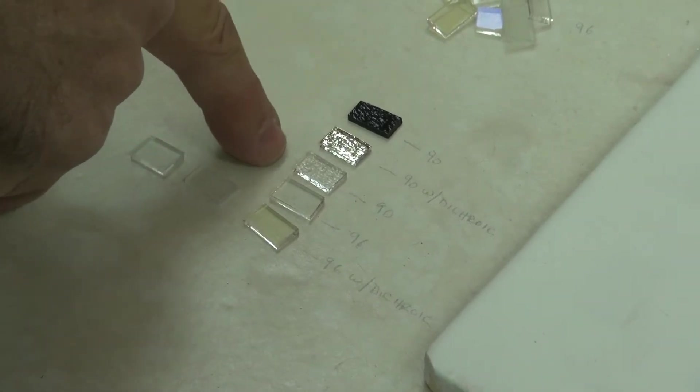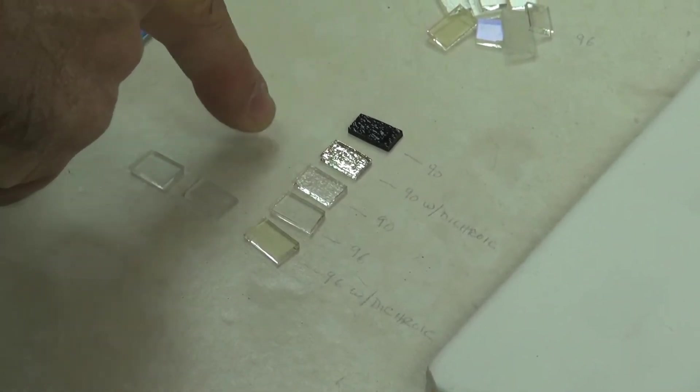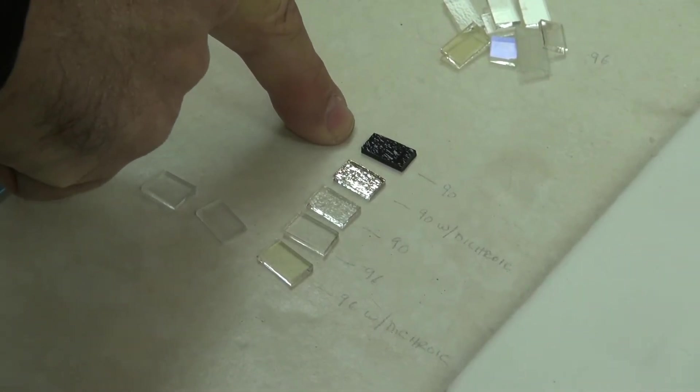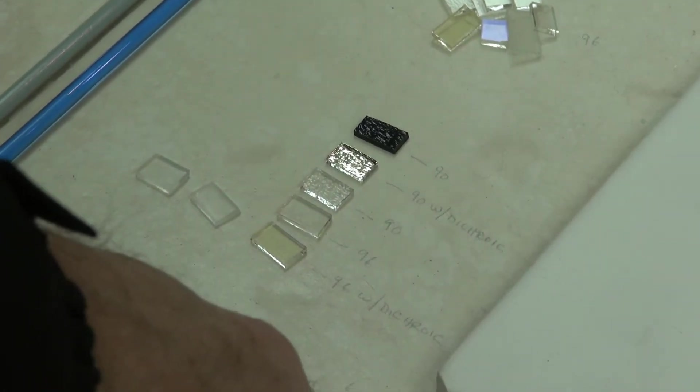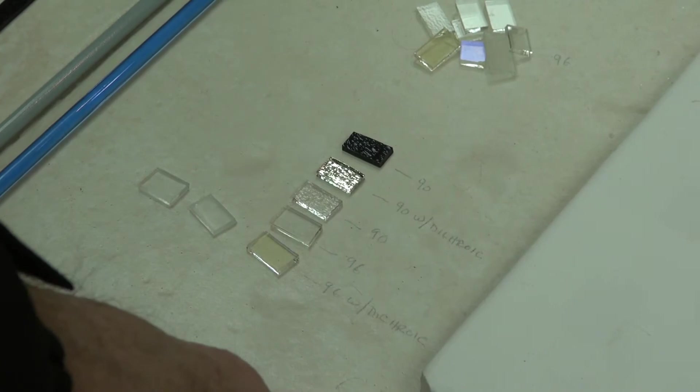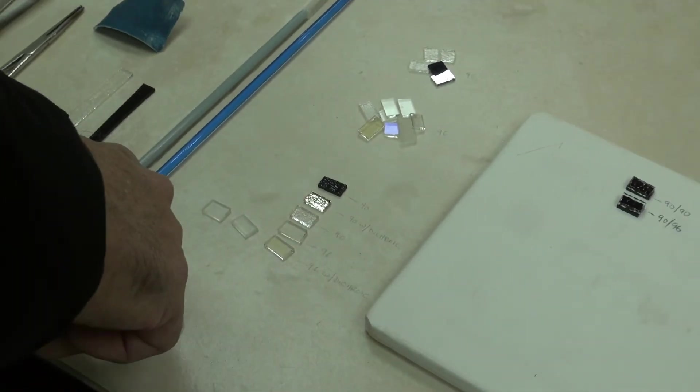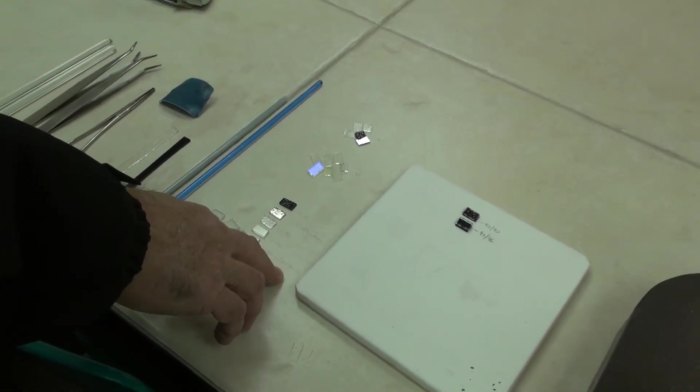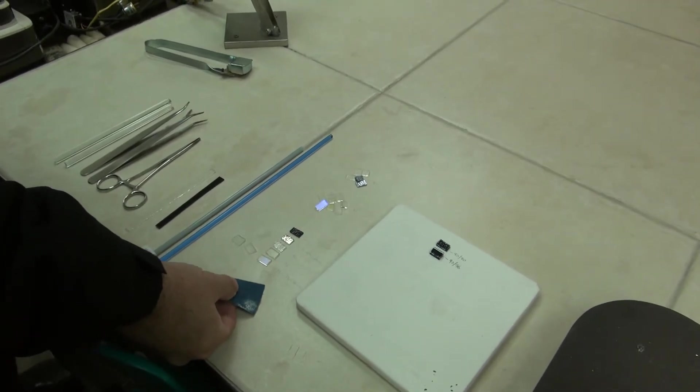So when I pull these three, they should pull straight because it's all 90. Once I add a 96 to the 90, it'll pull curved. And when there's a big difference in compatibility, say you were pulling a borosilicate at a 32 COE on a 90, the curve would be very, very dramatic. This bottom piece is a 96, again with dichroic on it. And I would use sandpaper to sand that dichroic off.